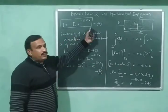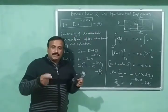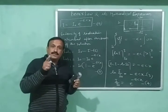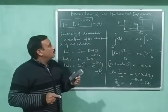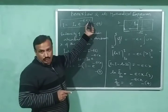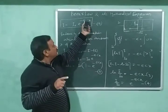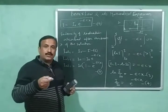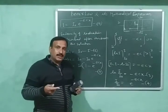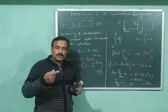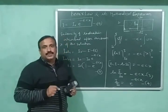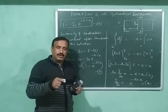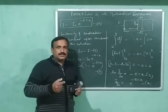Equation number 5 also tells us that the intensity of the radiation decreases exponentially with the thickness of the absorbing solution as well as the concentration of the solution. I have explained what exponential decrease means while discussing the mathematical expression of Lambert's law, and I will share the link to that video in the description box.